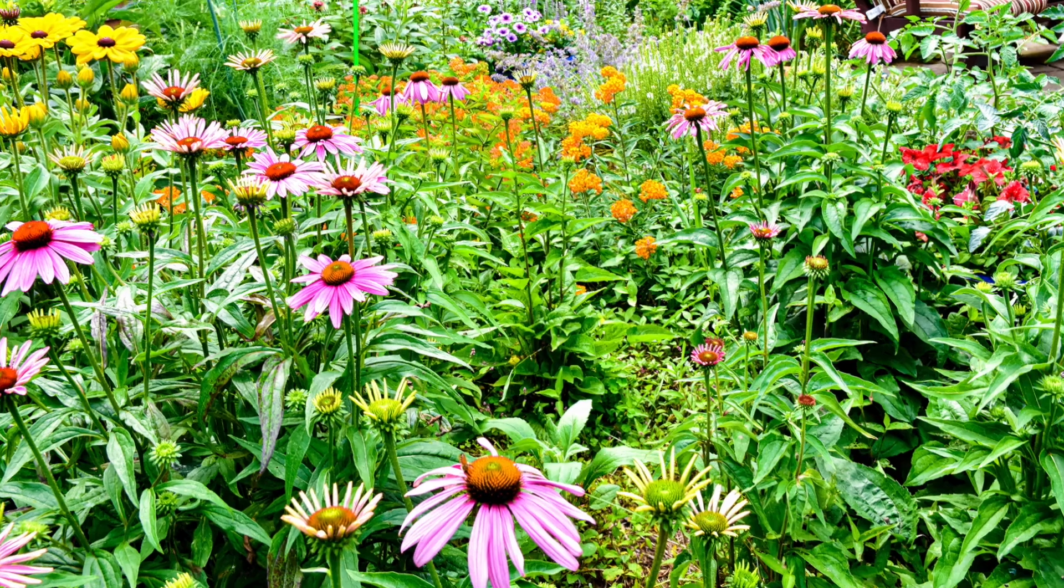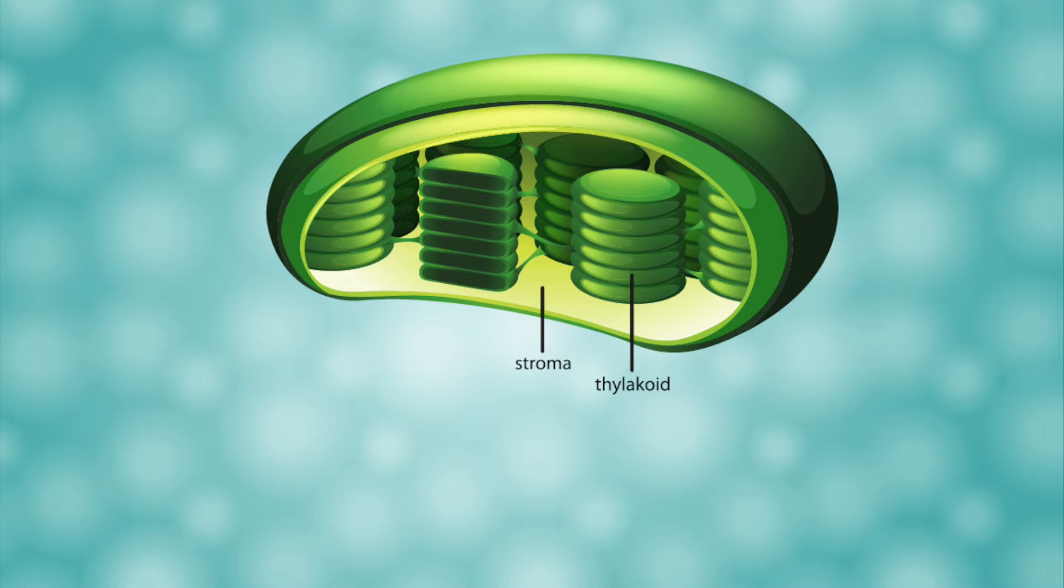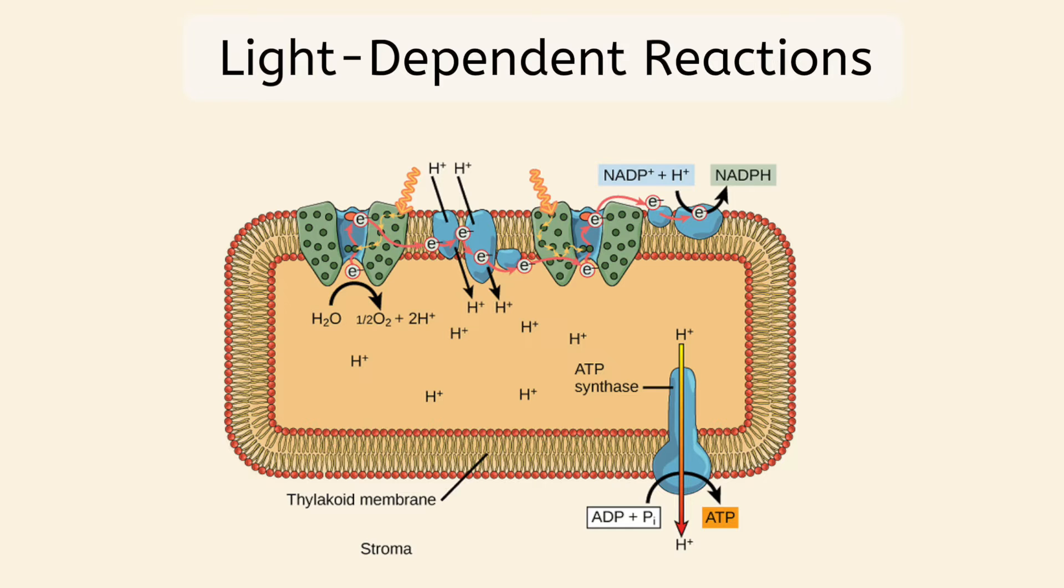We'll begin by zooming into the leaf of a plant, where most of a plant's photosynthesis takes place, and focus on just one of the many chloroplasts in one of the leaf cells. Photosynthesis consists of two sets of reactions. First are the light-dependent reactions, which take place in the thylakoid membrane. These are followed by the light-independent reactions, which take place in the stroma. The process starts when a particle of light, called a photon, enters the leaf and is absorbed in a photosystem. Photosystems are combinations of proteins and chlorophyll pigment. When light is absorbed in the photosystem...